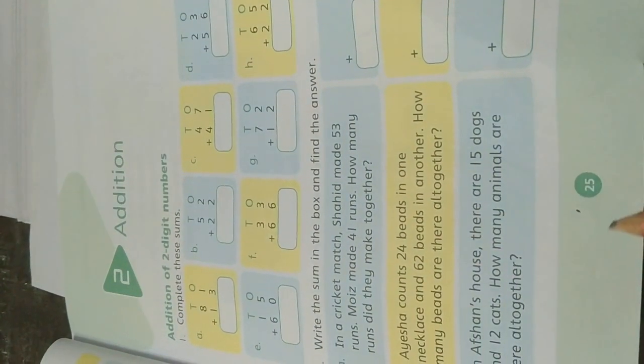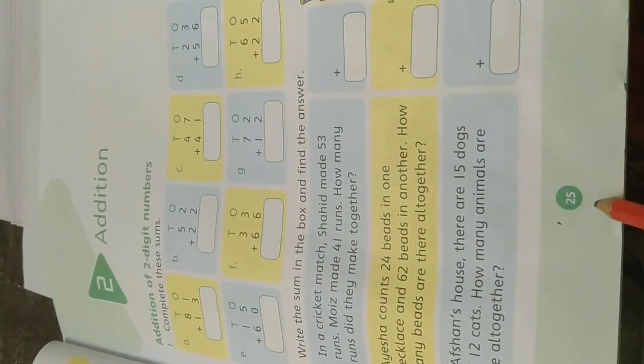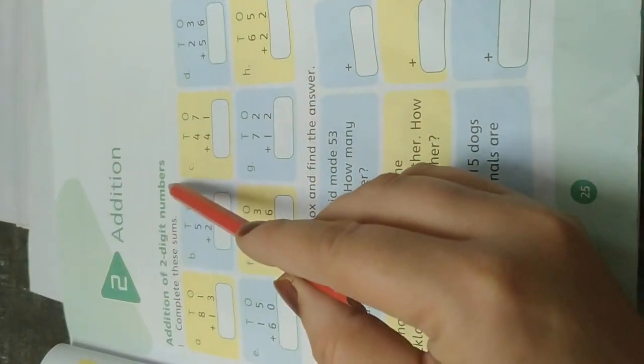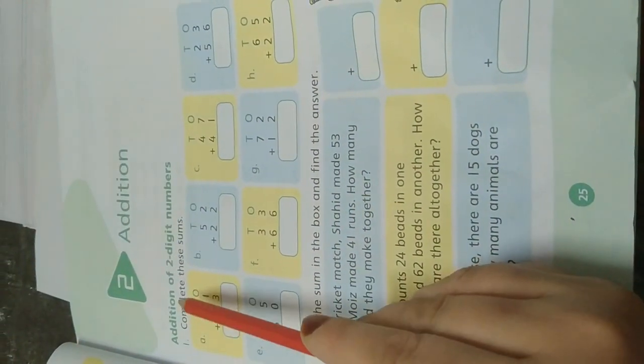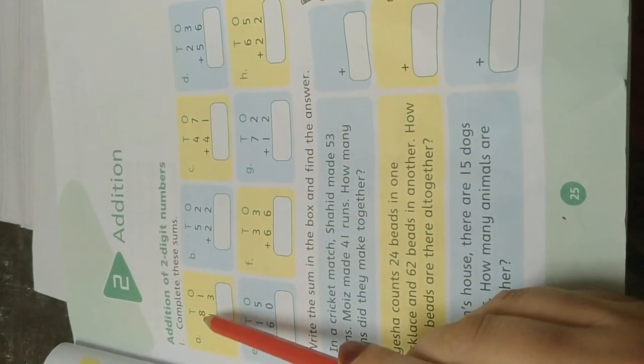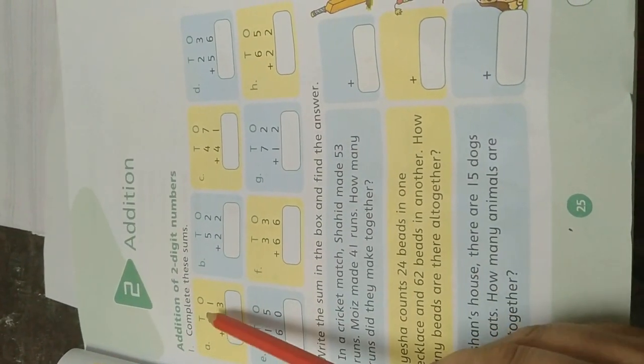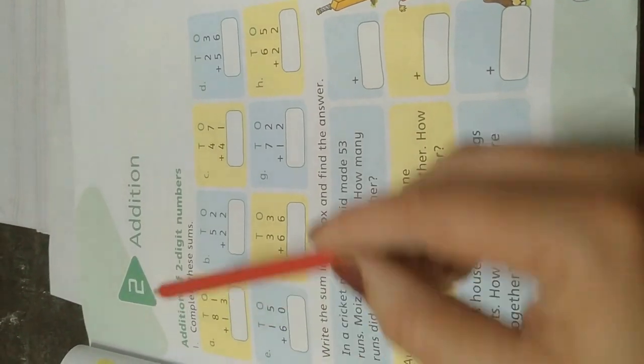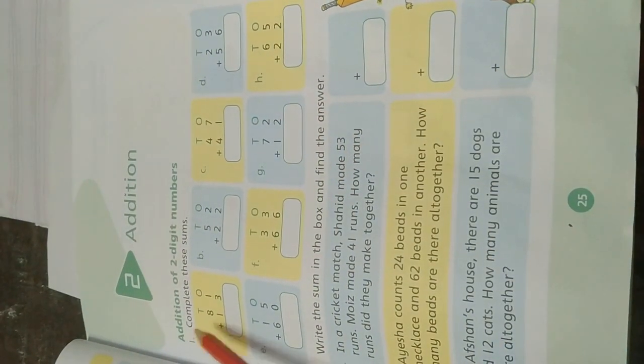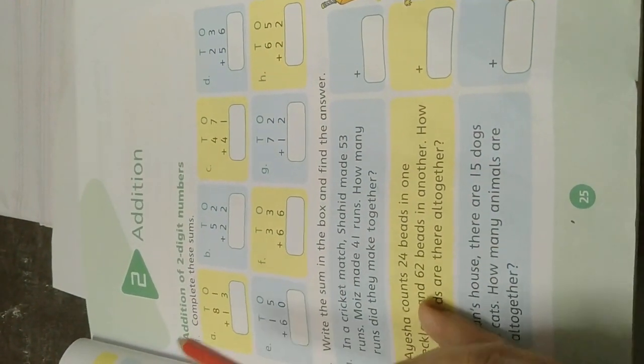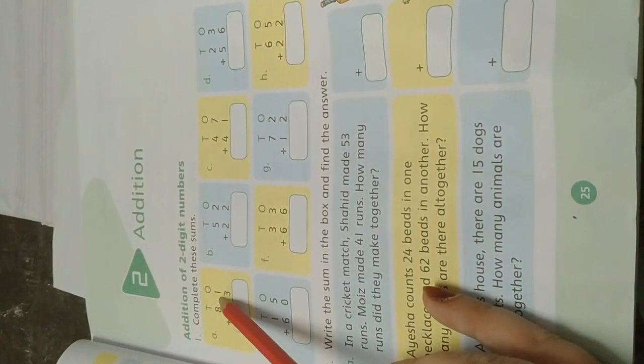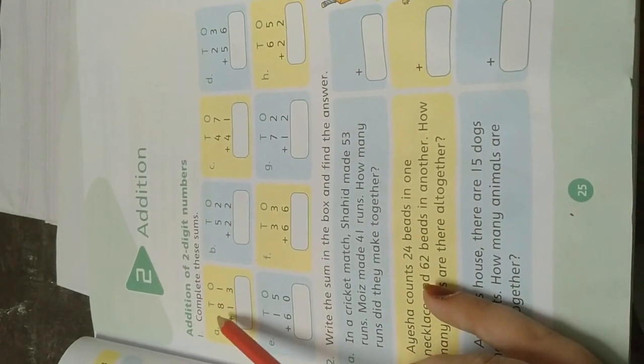This is page number 25. Addition of two-digit numbers - complete these sums. Option A: we have 81 and 13. Yesterday I told you that first you will put the place value. We have the place value ones and tens, right? So one in ones we have one and three, and in tens we have eight and one.